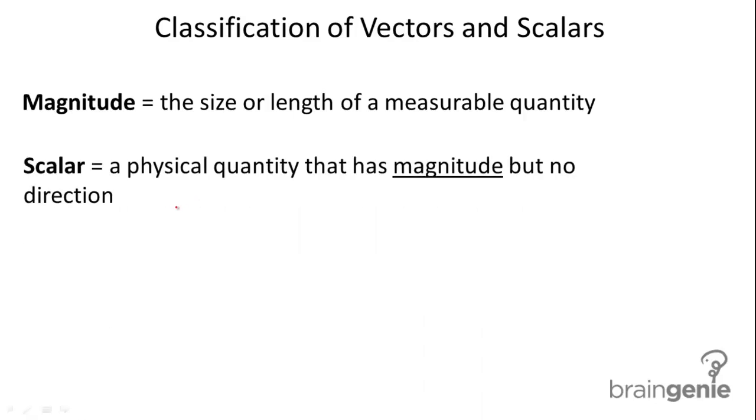Now, a scalar is a physical quantity that has magnitude, but no direction. Let me give you a couple of quick examples. Age is a scalar. You can only say that you're 12 years old. You can't have a direction to that age. You can only tell the actual amount of your age. Another example would be temperature.